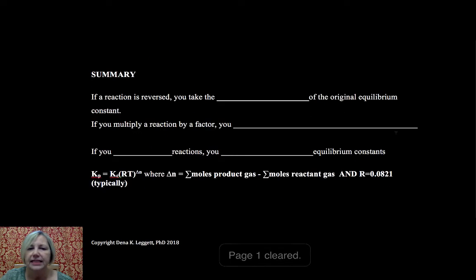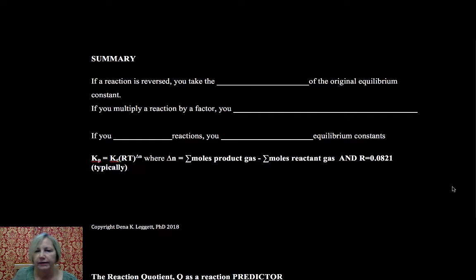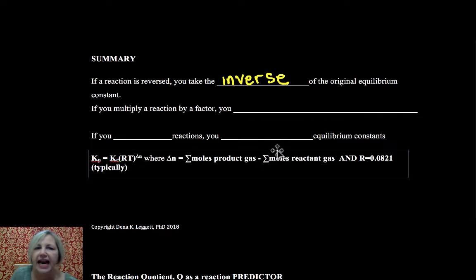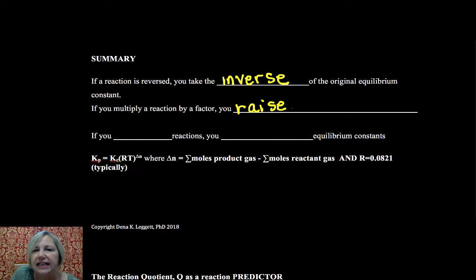So let's summarize that in a reaction, then I'm going to throw in one little bonus for you. If a reaction was reversed, you take the inverse of the original to find your new K. If you multiply by a factor, you raise K to a power.